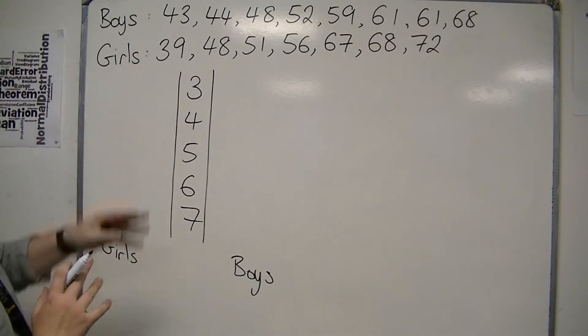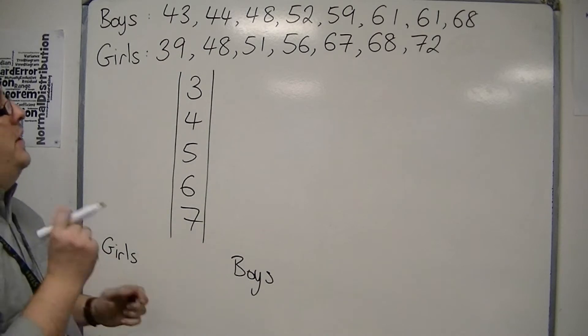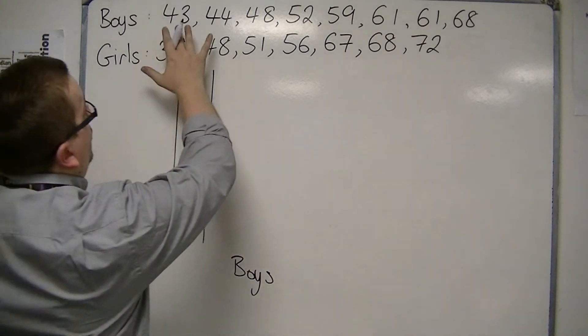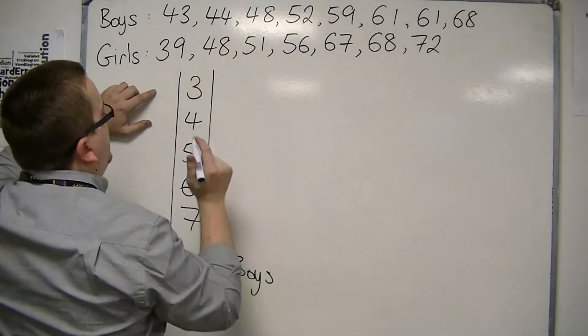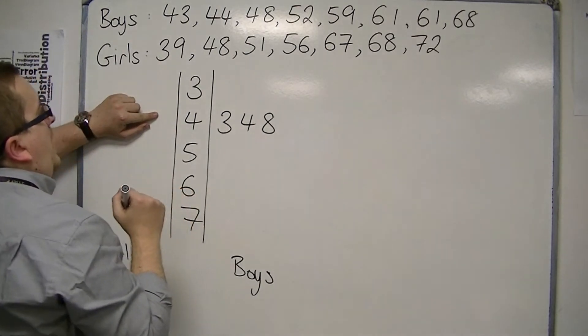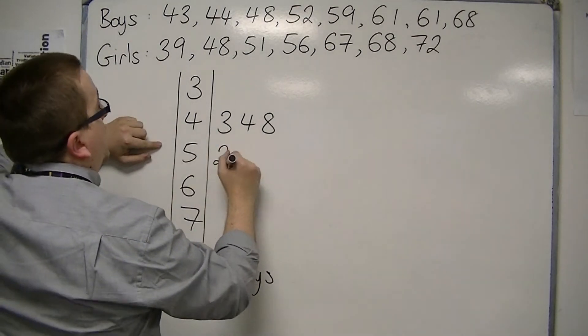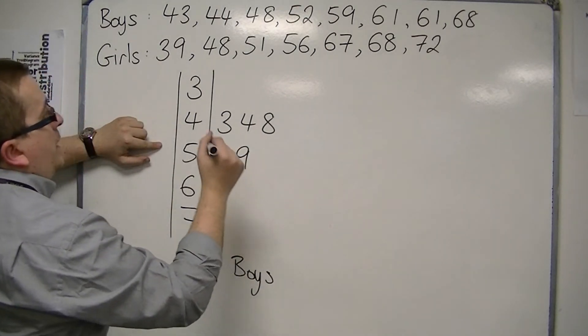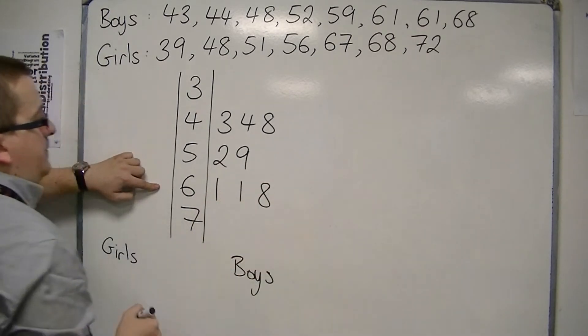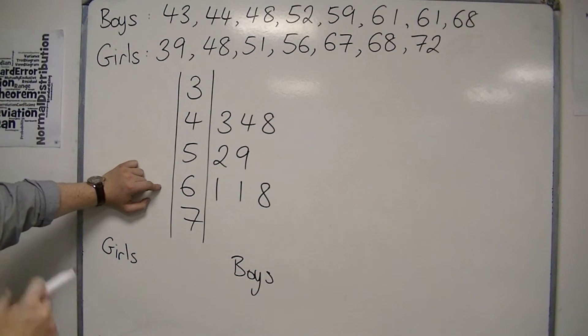So, I'm going to start off with the boys. I've put these numbers in order to make this easy for ourselves. So we're going to start off with 43, 44, 48. So 43, 44, 48. And then I've got 52, 59, then I've got 61, 61, and 68. And that's my scores for the boys.